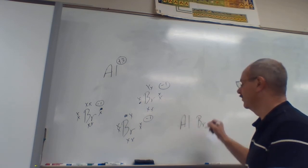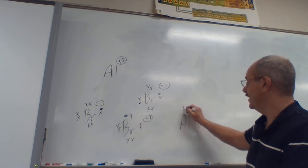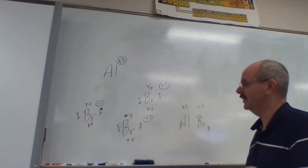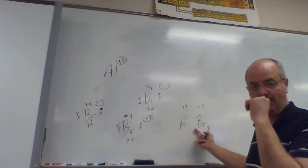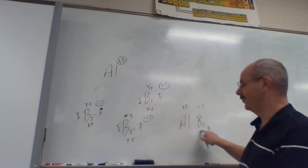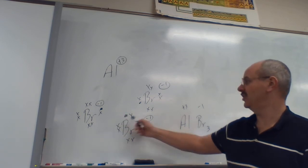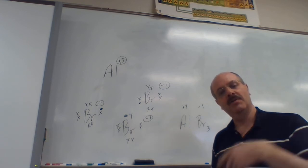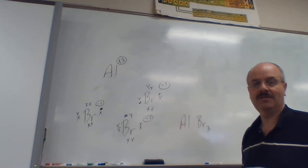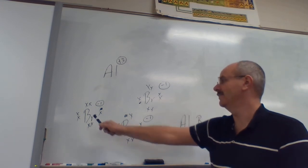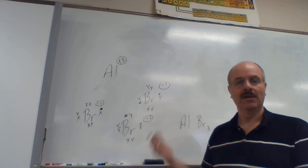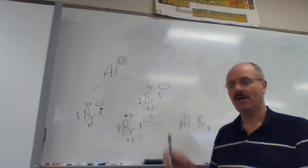Let's go back — Al has a plus three, Br has a negative one. If we use the crisscross method, the three goes over here, the one goes there, we get the formula AlBr₃. That's exactly what we just came up with: one Al and three Br's. All that's happening is we've got this exchange of electrons causing them to pull together. Ultimately this compound has no charge — the charges cancel out — so it's neutral, but it's made up of three negative bromines and one positive aluminum held together by electrostatic charges.